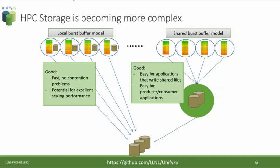Both models have their pros and cons. The local burst buffer model is fast — it's right on the compute node, there's no contention because you're not sharing that node with other jobs, and it has excellent scaling potential because as you add compute nodes you automatically add storage resources. The shared burst buffer model is similar in concept to a mini parallel file system, which is convenient for applications that write shared files using things like MPI I/O or HDF5, and also works well for producer-consumer applications — for example a climate model where an ocean component produces a file that the atmosphere component reads.